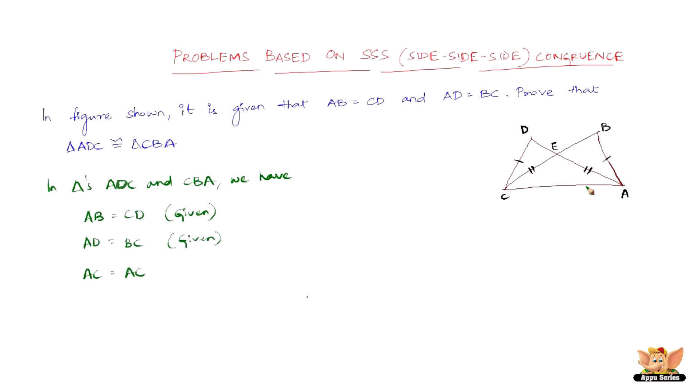Why is AC equals AC? Because it is a side which is common to both the triangles. So therefore,